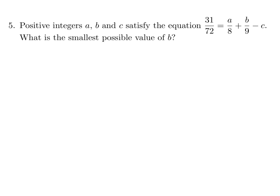Positive integers A, B, and C satisfy the equation 31 over 72 equals A over 8 plus B over 9 minus C. What is the smallest possible value of B? Let's solve this equation for B.